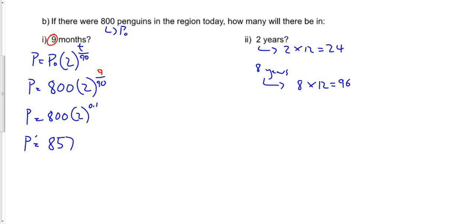So I'm going to actually solve this. I'm going to solve it for 8 years. I'm interested to know how many penguins there are going to be after 8 years. So I'm going to plug in my formula. Again, we've already substituted in the number of penguins that started there. So we know that's 800 times 2 to the exponent 96 over 90.